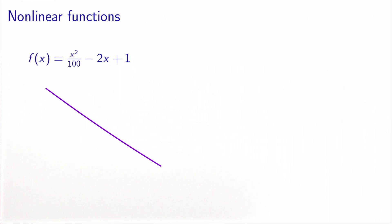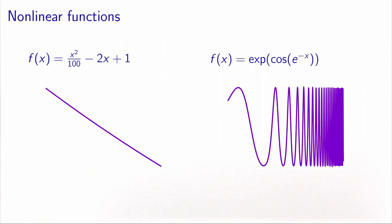Linear functions provide a great deal of simplification in optimization. But the set of nonlinear functions is very large, with many different types. Here I have plotted a polynomial of degree 2 alongside the exponential of the cosine of the exponential of minus x. Intuitively, the function on the left is easier to deal with — it is not far from being linear, at least visually — while the function on the right is definitely far from linear.